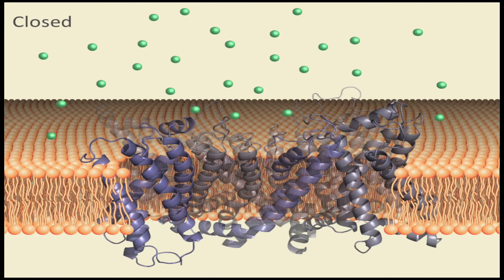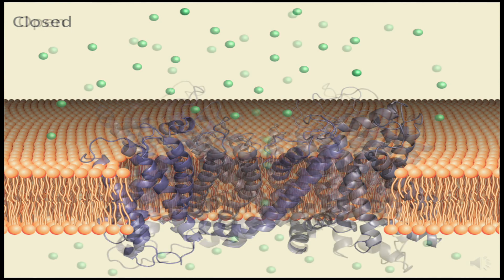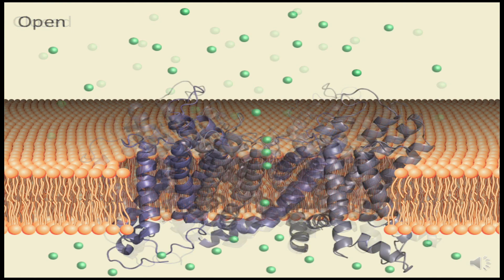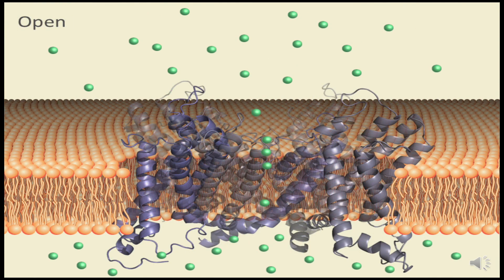Ion channels are a class of receptors which form pores in the cell membrane. Ion conduction through these pores is controlled by stimuli, which may include but are not limited to temperature, voltage, and neurotransmitters.